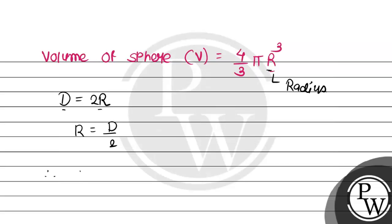So volume can be given as 4/3 π (D/2)³. Let's simplify this expression. V = 4/3 π D³ divided by 2³, that is 8.